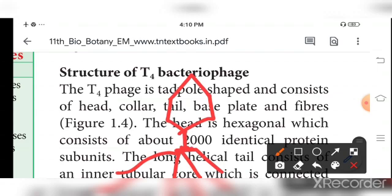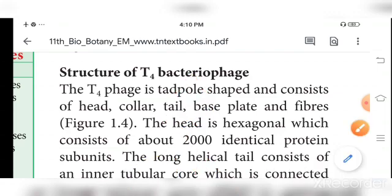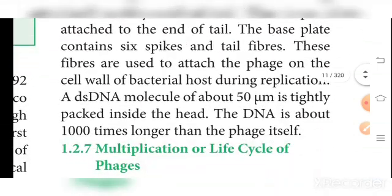This is the bacteriophage structure. The head will be made up of two molecules. The protein coat is called the capsid, and it contains a DNA or RNA molecule — that is, nucleic acid. The size will be about 50 micrometers. The DNA content in the head will be 1,000 times longer than the phage itself.